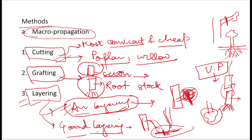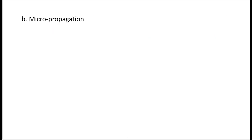So these three — cutting, grafting, and layering — are the commonly used macro propagation methods for forest plants. Now we will talk about micro propagation, which involves tissue culture.